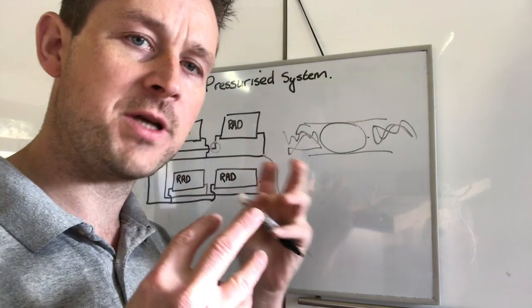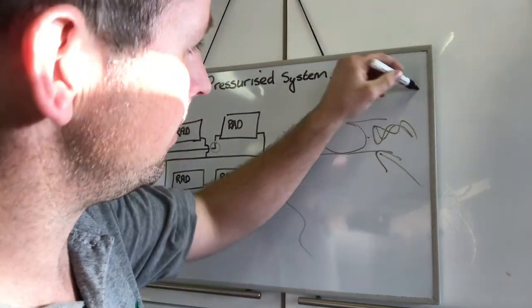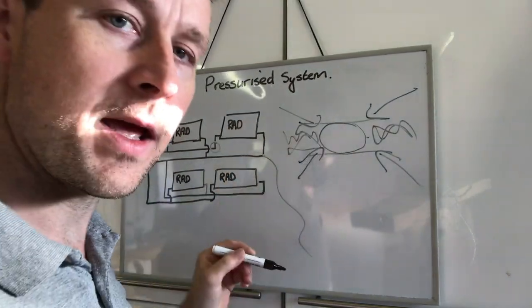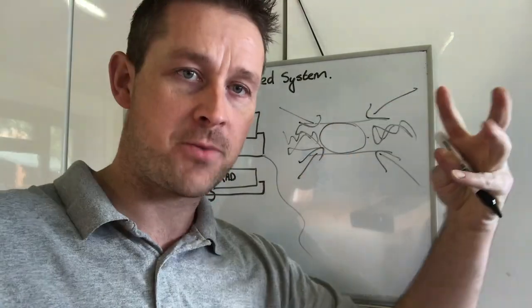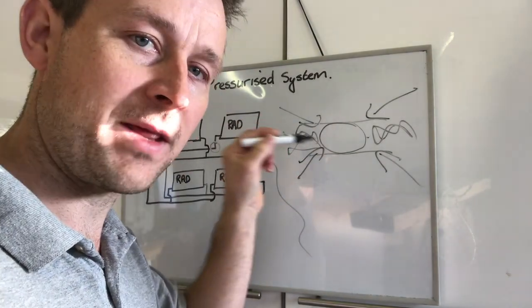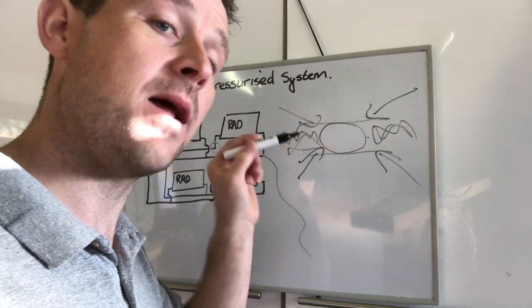On a pressurised system, the pressure is coming from all angles. So from this way and this way. Even though we want the water to go that way, because it's pressurised, it's pressured from everywhere. So we need to dislodge that piece of air. And the best way to do that is like this.